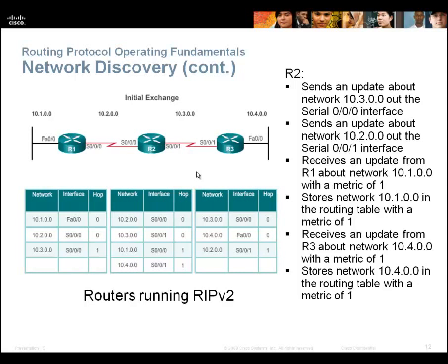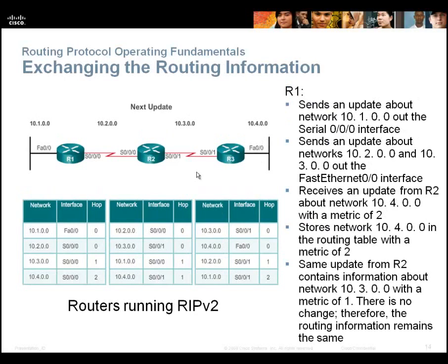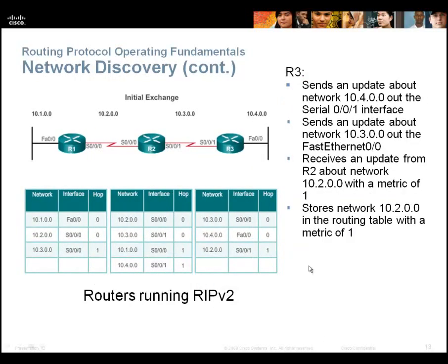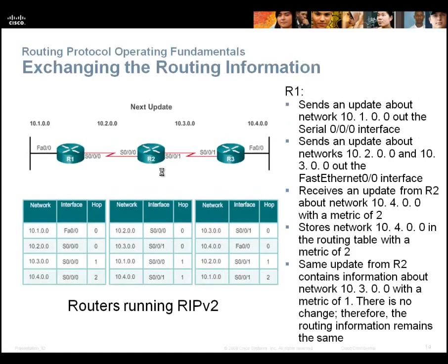After the first exchange, R2 updates his information and sends another update. This time, since R2 received a message from R3 in the first cycle and now knows about .4, he sends that information to R1, and R1 adds it. At this point all routers know about all networks — it took two message periods. If messages happen every 30 seconds, after the first 30 seconds the tables show remote networks from each other; after the second 30-second cycle, they know the entire network. In this case it took two cycles, or 60 seconds, for the routers to converge.